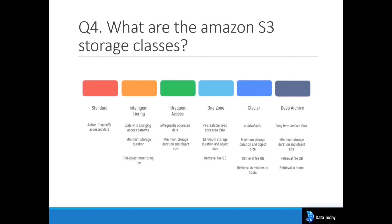Infrequent Access is for data not accessed daily — it charges less than Standard. One Zone-IA is for recreatable, less-frequently accessed data with a retrieval fee. Glacier and Deep Archive are for data you rarely use — perhaps once a year or after many years — stored at minimal cost. Retrieval from these classes can take minutes to hours, but if that is acceptable for your use case, these are ideal options.